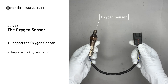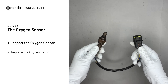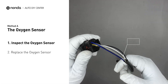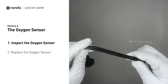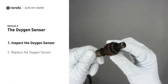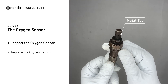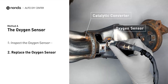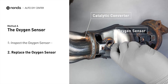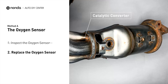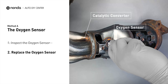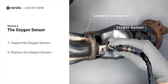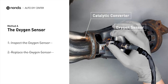Visually check the oxygen sensor's electrical connections, wire harness, and metal tabs for any damages. If damages are found, then replace the oxygen sensor. If there is no damage found on the oxygen sensor, you would need to take your car to consult professional mechanics.